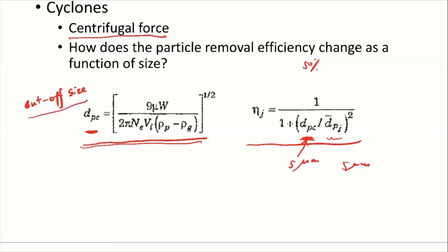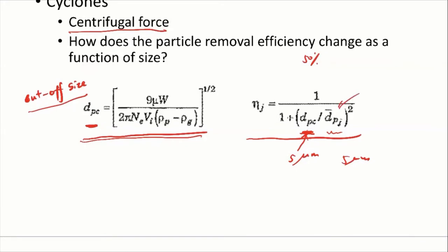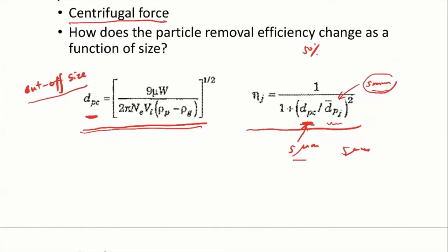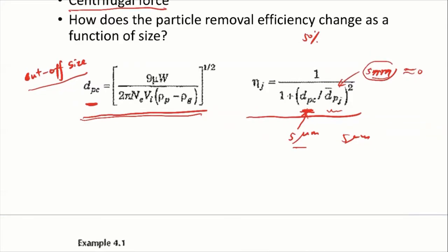If you have a very large size, say 5 millimeters, then 5 microns divided by 5 millimeters is very small — essentially 0. So 1 divided by (1 plus 0) is 1, meaning 100% collection efficiency for very large particles. For very small particles, say 5 nanometers, 5 microns divided by 5 nanometers is 1,000, so you'd have 1,000 squared in the denominator — giving almost 0% collection efficiency. That's how this equation shows that collection efficiency increases with particle size.